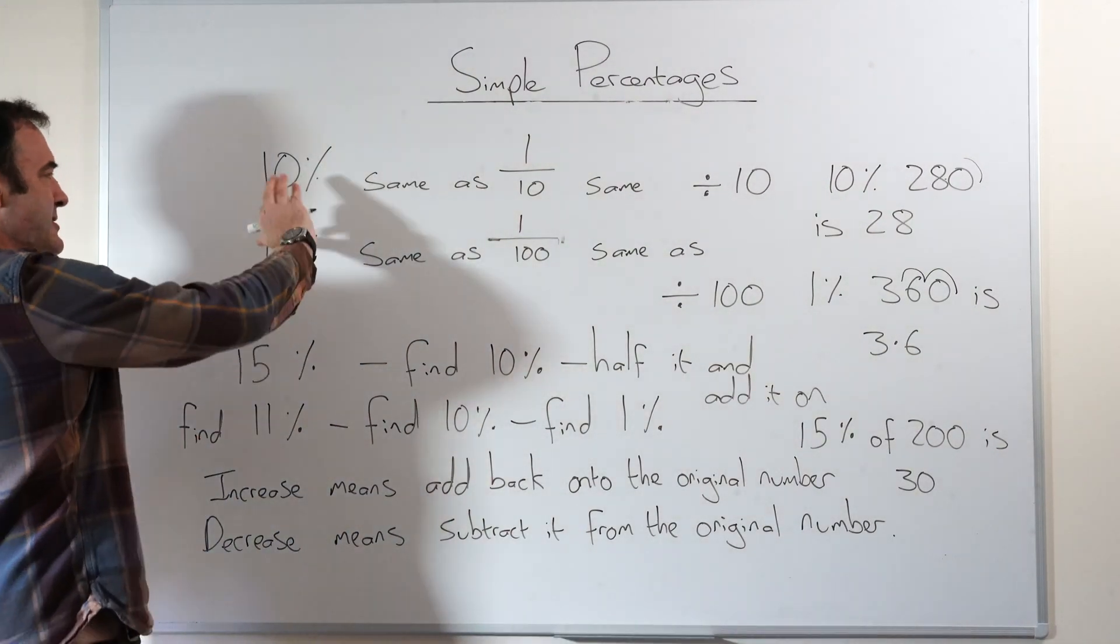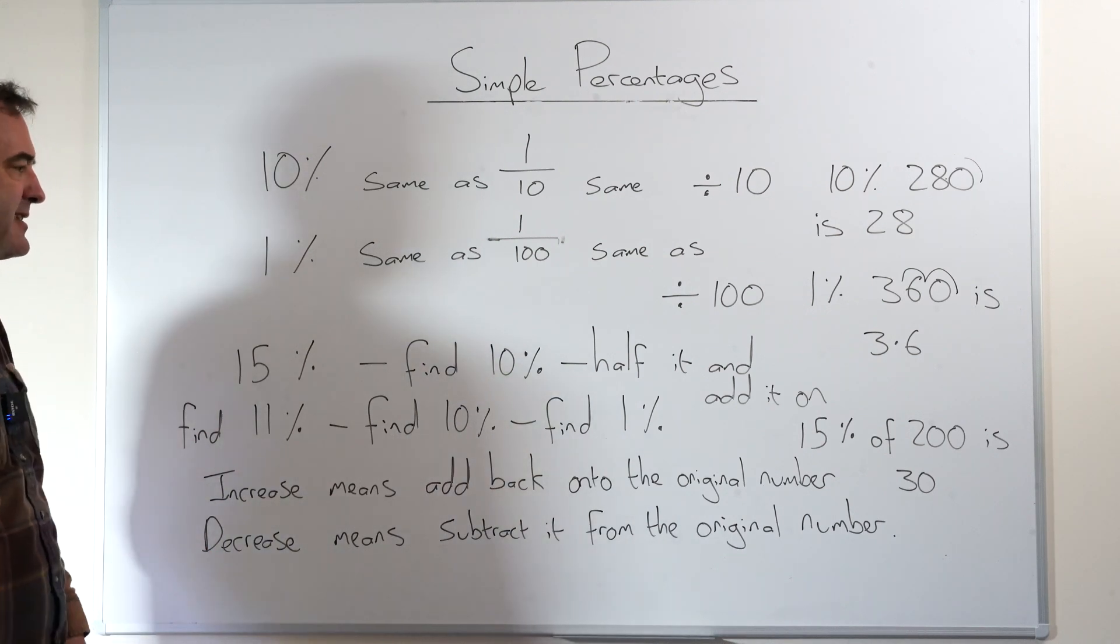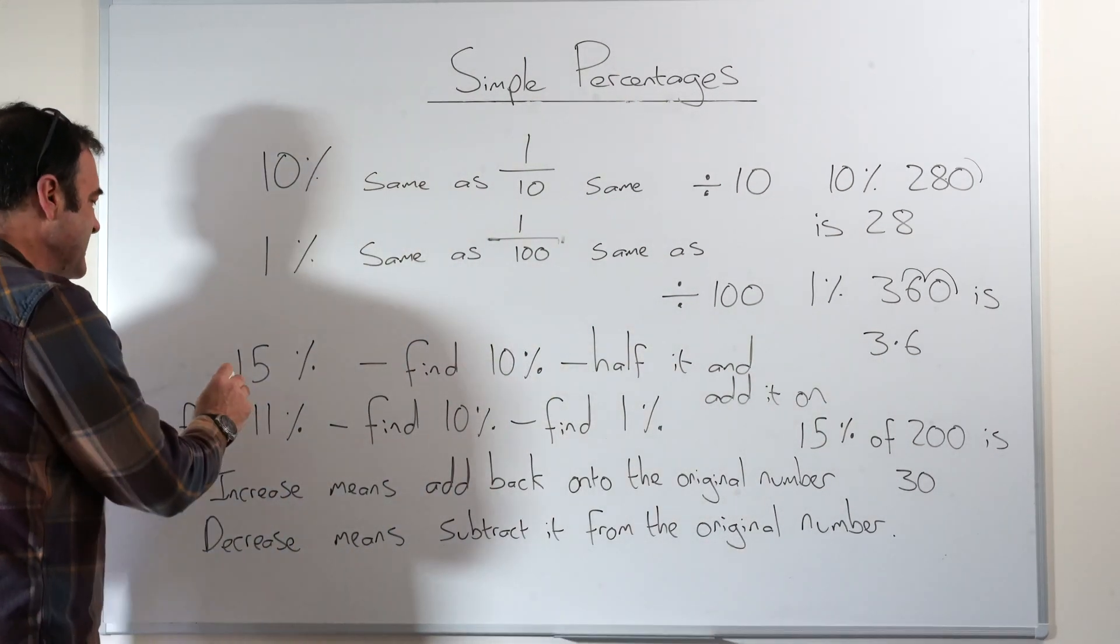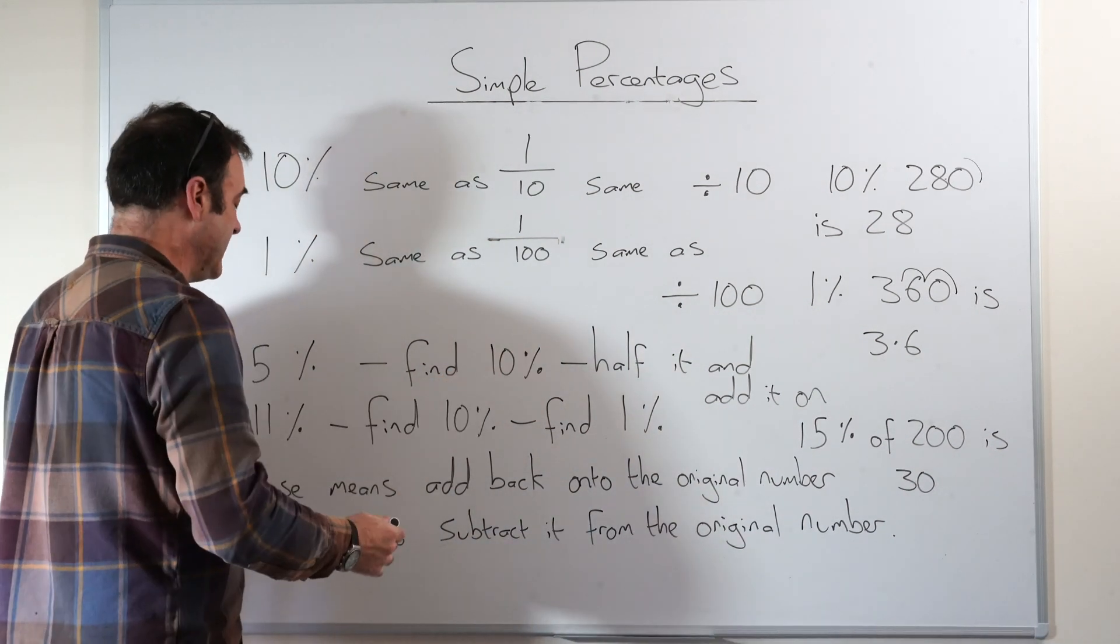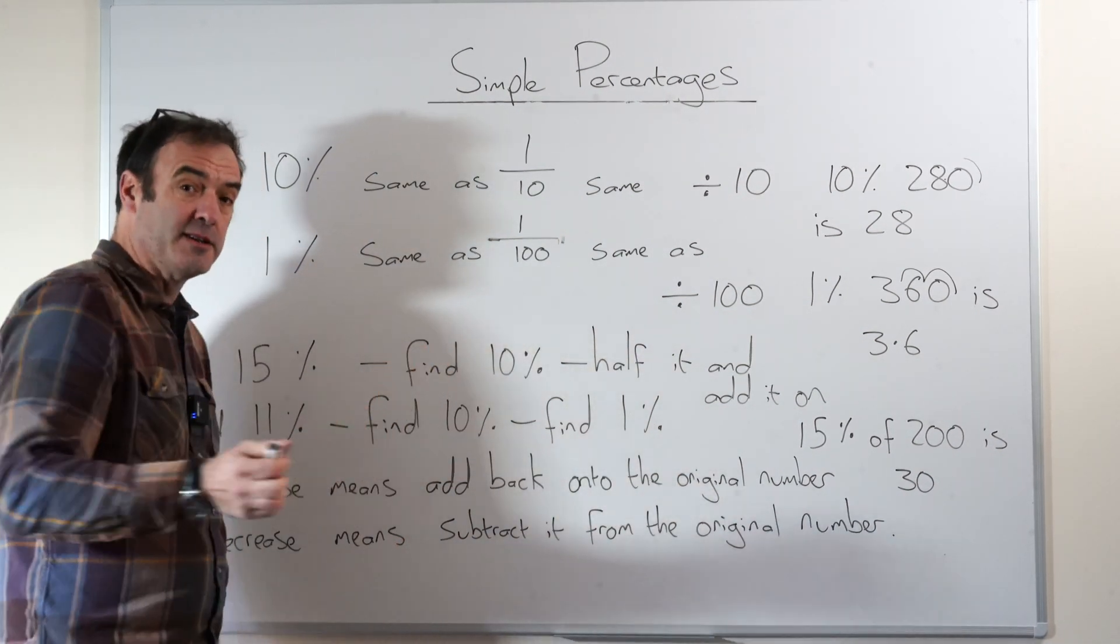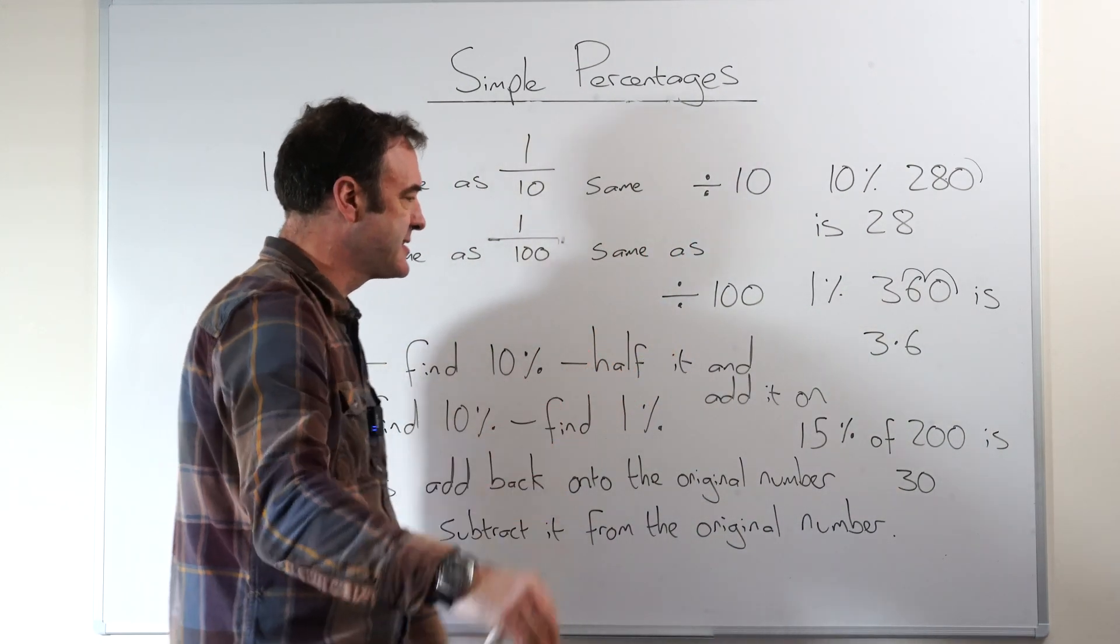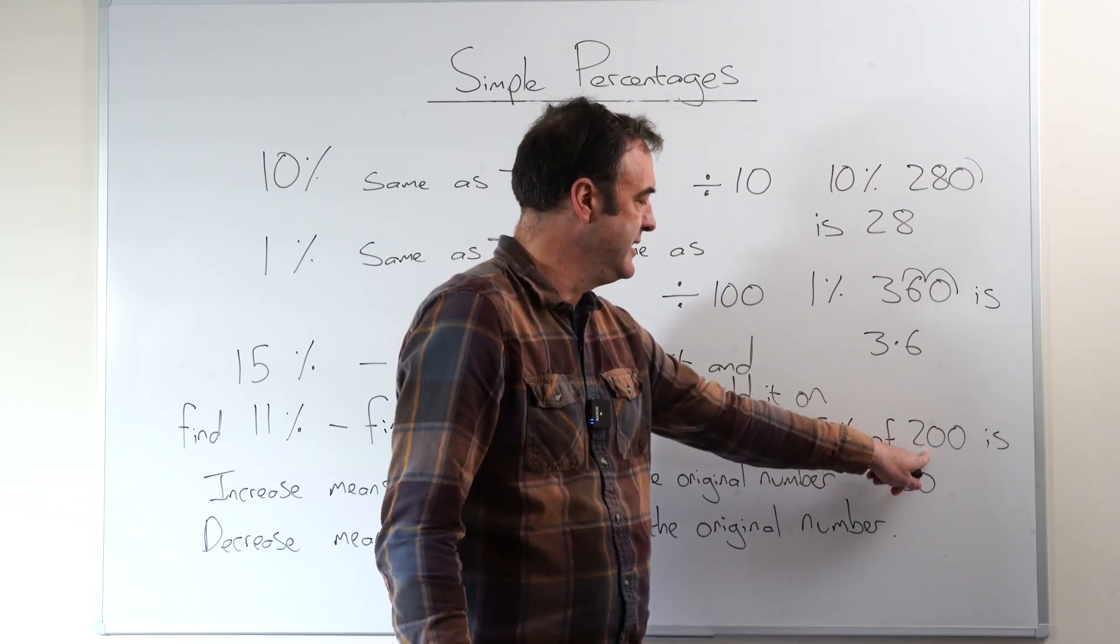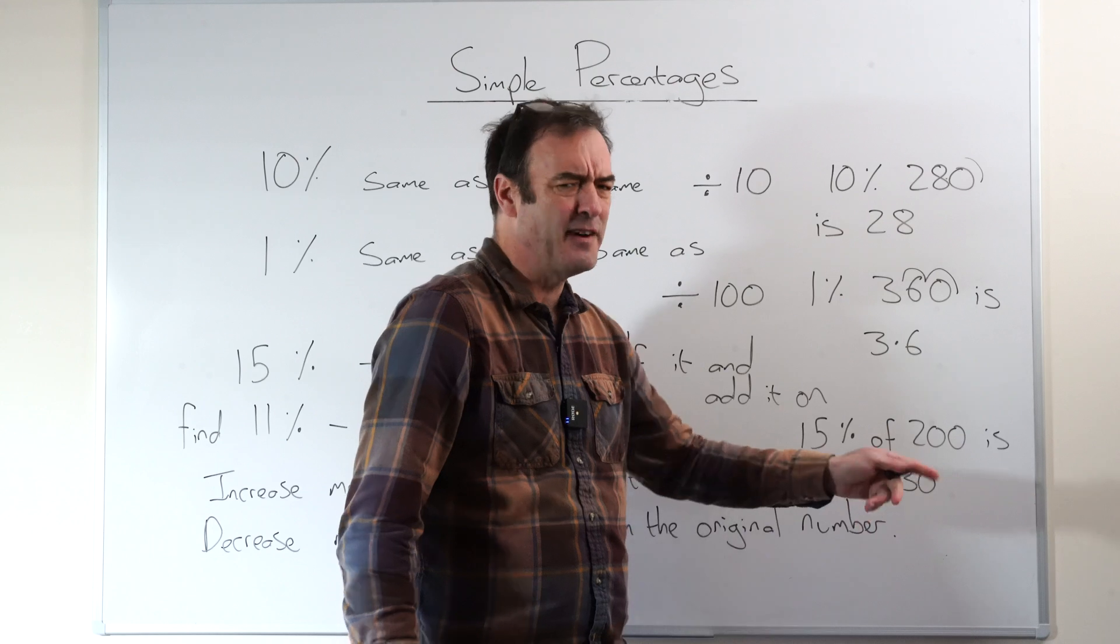So what we can actually do is use this knowledge to create composites. We can put this together to find any percentage. And that's the beautiful thing about this. So if we wanted to find 15%, we could simply find 10% first, halve it, because after all, that would be 5%, wouldn't it? Put that together and you've got your 15%. So 15% of 200, find 10% is 20. Half of that is 10. Put it together. It's 30. Very easy.